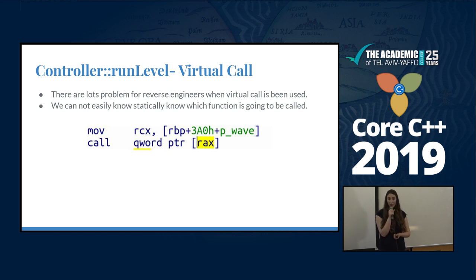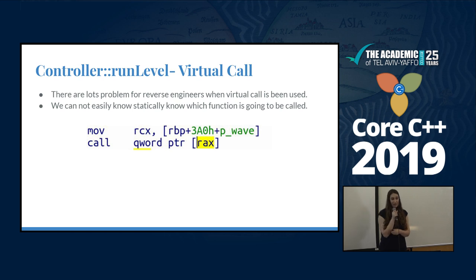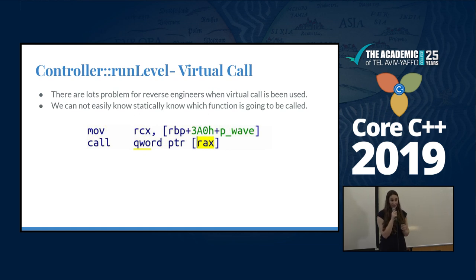Afterward, you have the 'run level' virtual call. Virtual calls are quite different because you have a call to a register whose value we don't know — we don't have an address, only a register. If we tried to reverse all of this code statically and understand each time what happens, it would take a very long time and be very frustrating to determine what was called, which object it was, and which function from the Vtable was invoked. So we are going to start dynamic reversing.